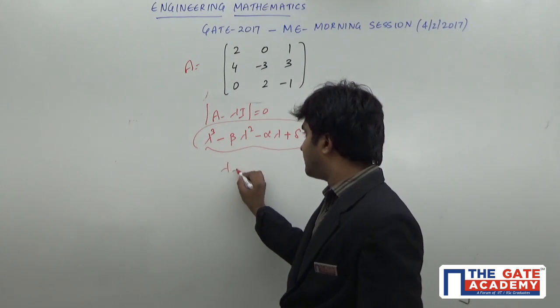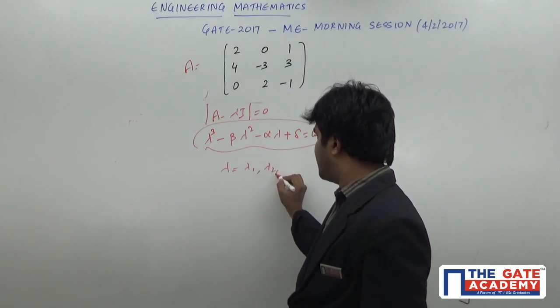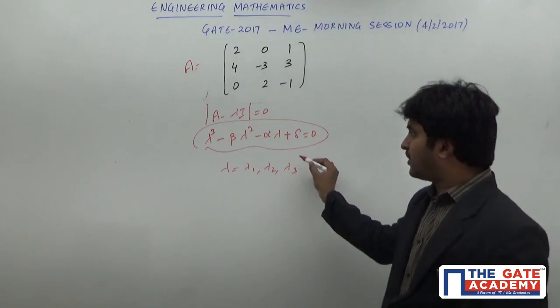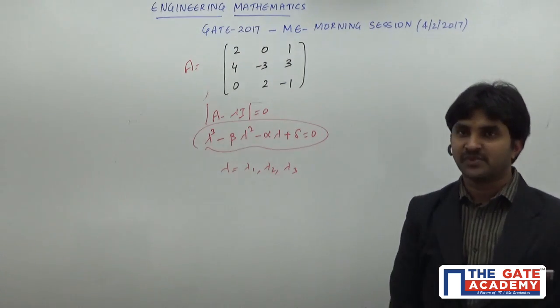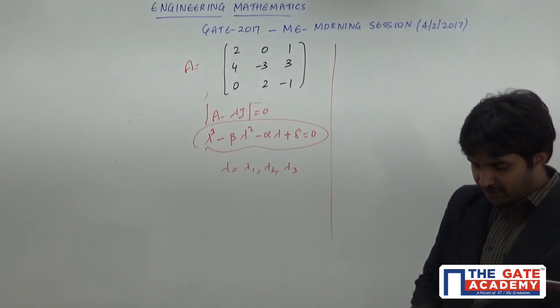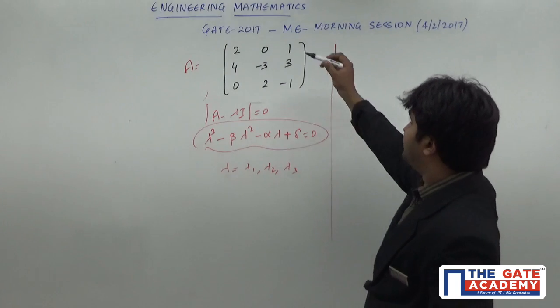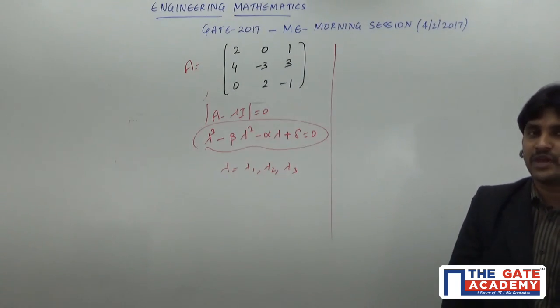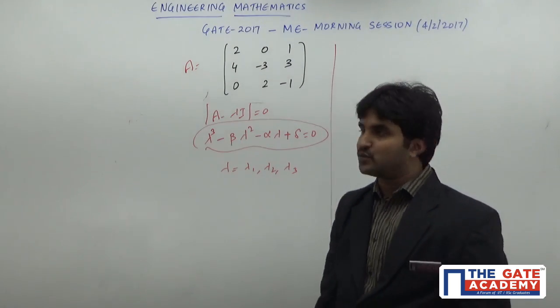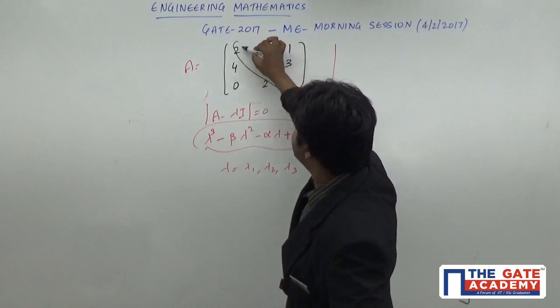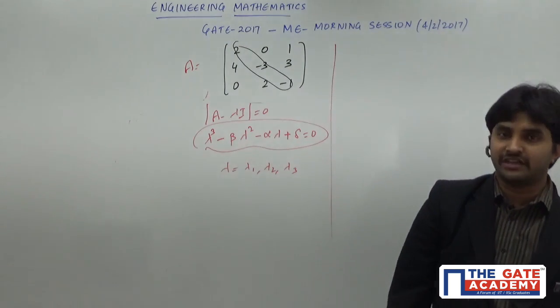If you get lambda equals lambda 1, lambda 2, lambda 3, the product is the multiplication of these values. This is the general method. But we have a shortcut: the determinant of the matrix equals the product of the eigenvalues, and the trace equals the sum of the eigenvalues. Since we need the product here,